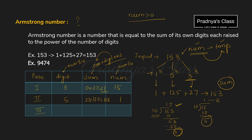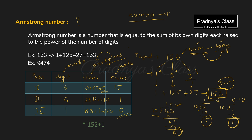Pass 3: the number is 1. We take modulus by 10 — 1 divided by 10 is 0 times, so the remainder is 1. Digit 1 is separated. Cube of 1 is 1; we add it to the previous sum: 152 + 1 = 153. Then number divided by 10 — when we divide 1 by 10 the quotient is 0. The loop will not continue further because the condition becomes false. We got the sum 153. We stored the original number in temp, so we compare temp and sum.